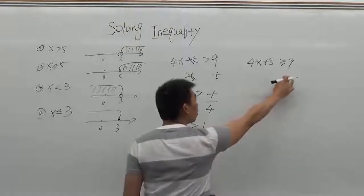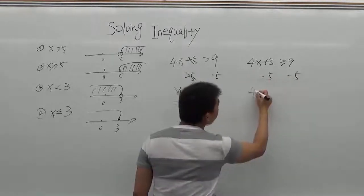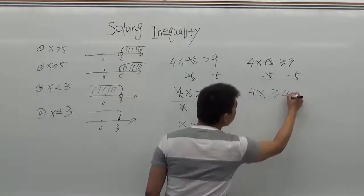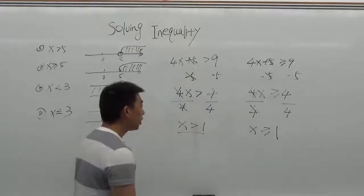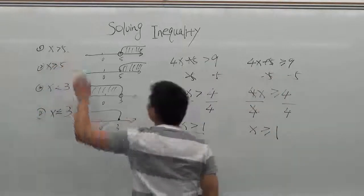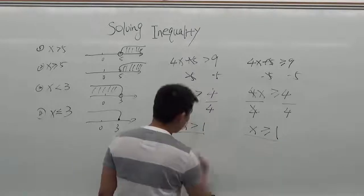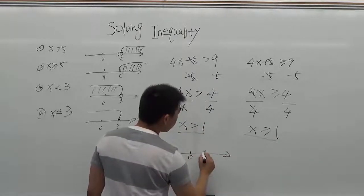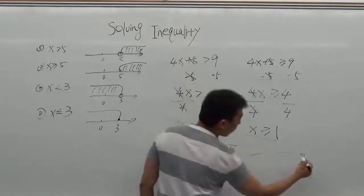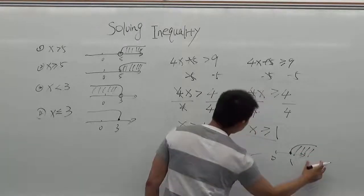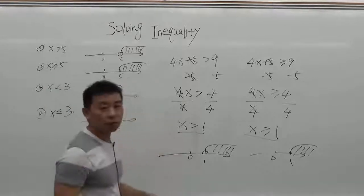For the second one, 4x plus 5 greater than or equal to 9: all the steps are the same. Subtract 5 from both sides — the 5s cancel — giving 4x greater than or equal to 9 minus 5, which is 4. Divide by 4 for both sides, giving x greater than or equal to 1. As you can see, whether it's a greater than sign or greater than or equal sign, the solving steps are identical. The difference is in the answer: x greater than 1 does not include 1 on the number line, while x greater than or equal to 1 includes number 1.